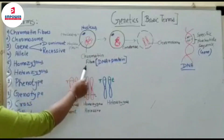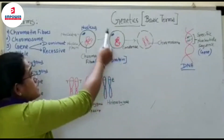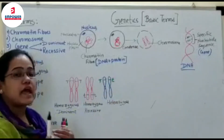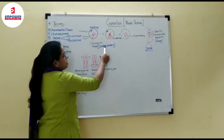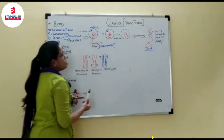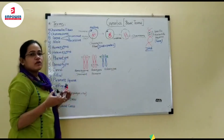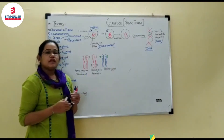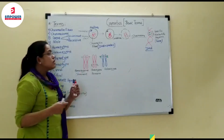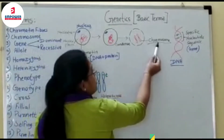Protein fiber is made up of DNA and protein. This is the condition when the cell is not divided. When the cell is about to divide, this protein fiber condenses and forms a structure called a chromosome. So chromosomes are basically the condensed form of protein fiber — like a guideline wire that is coiled and recoiled. That's how chromatin fiber coils and condenses into the form of a chromosome.